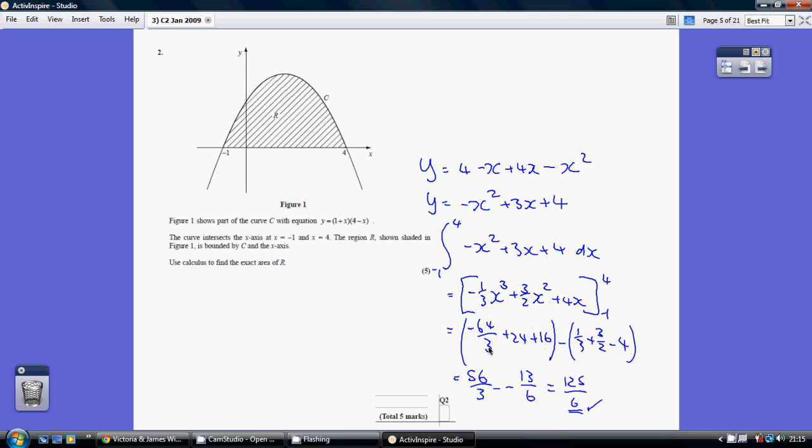So, add all of this up on your calculator. This is a minus number, this is minus 13 over 6, so be careful. We're minusing a minus, which is actually a plus, and that gives us 125 over 6, or its decimal equivalent.